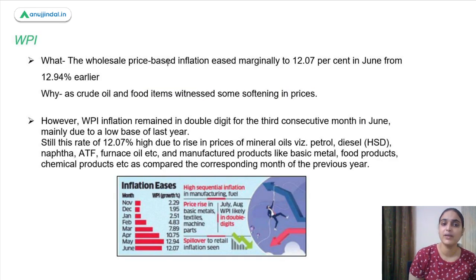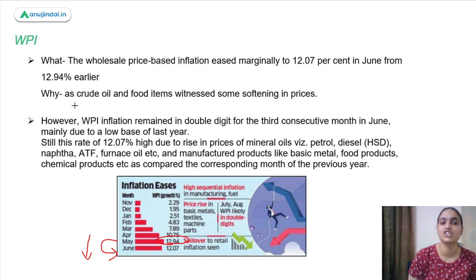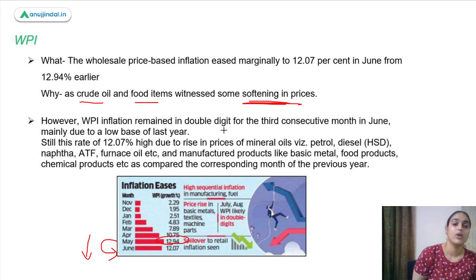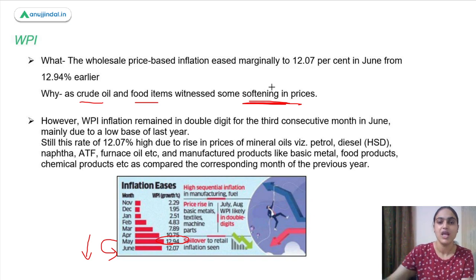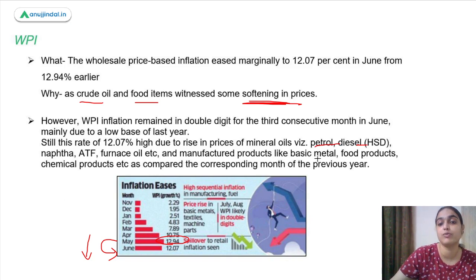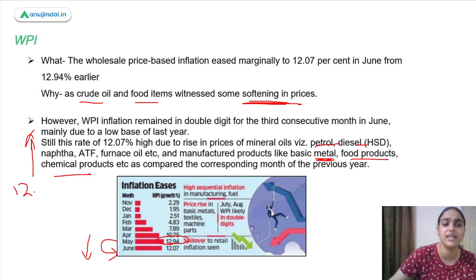Coming to WPI: it fell from 12.94% to 12.07% because crude oil and food items witnessed some softening in prices at the wholesale level. However, it remains high because petrol, diesel, furnace oil, and NAFTA prices have risen, as have manufactured products like basic metals, food products, and chemical products — so WPI now stands at 12.07%.